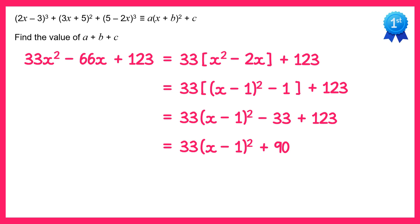It's now in the correct form, so you can see a is 33, b is negative 1 and c is 90. The question wants us to find a plus b plus c, so we just do 33 take away 1 plus 90, which is 122. And that's your answer to the question.